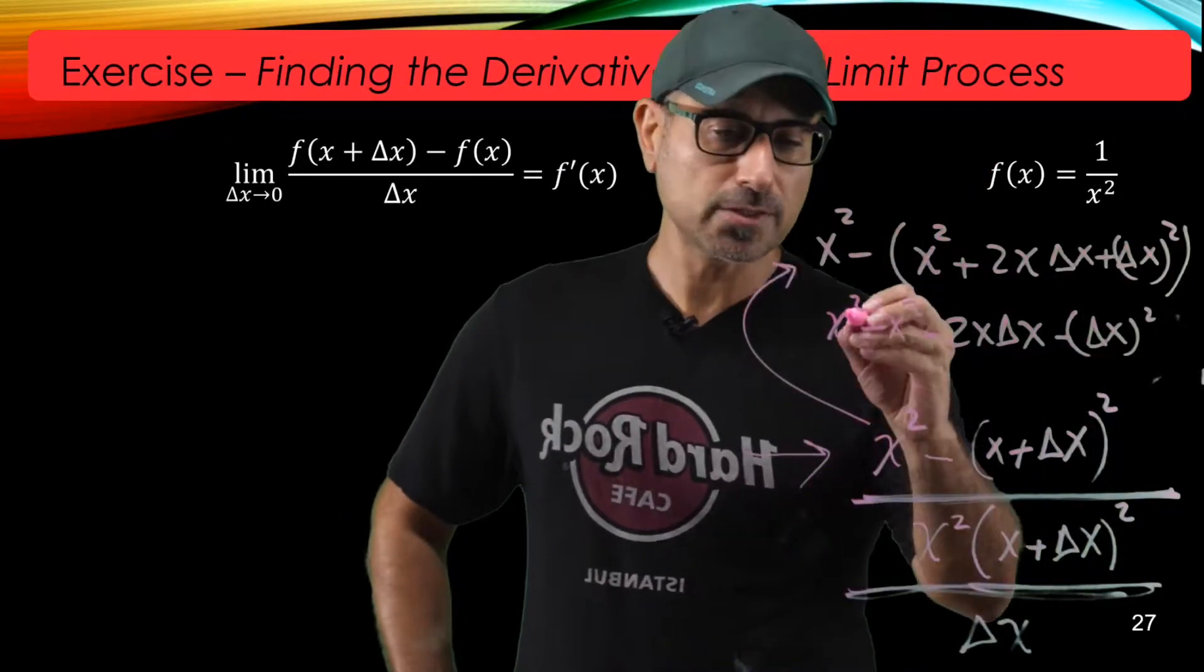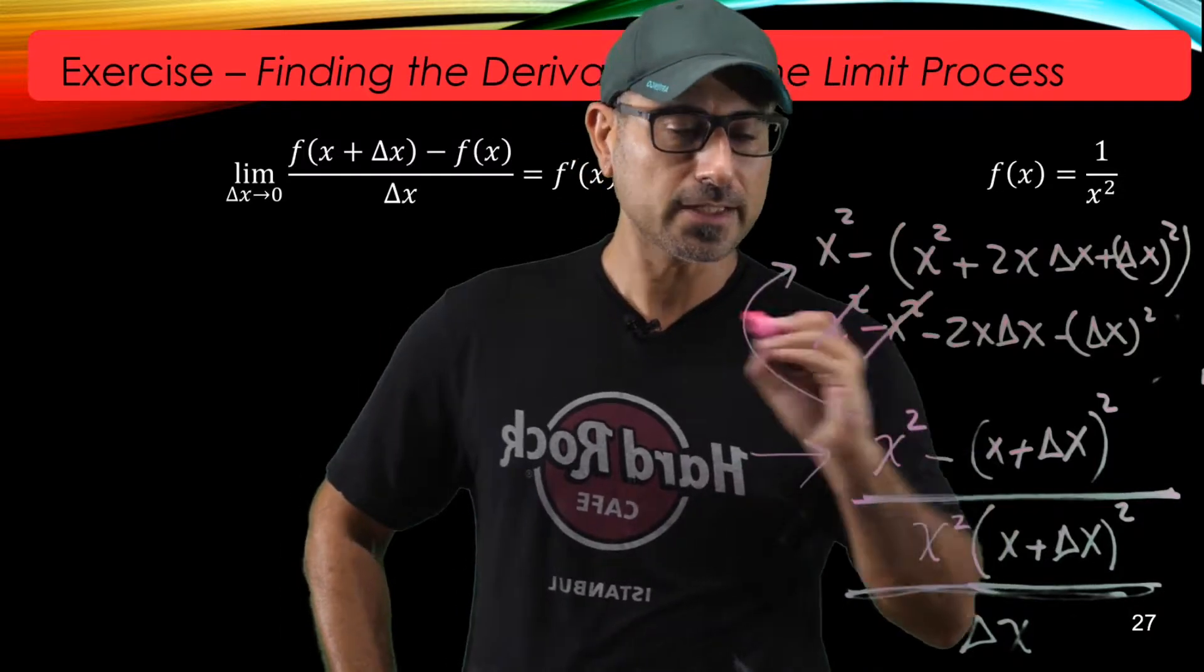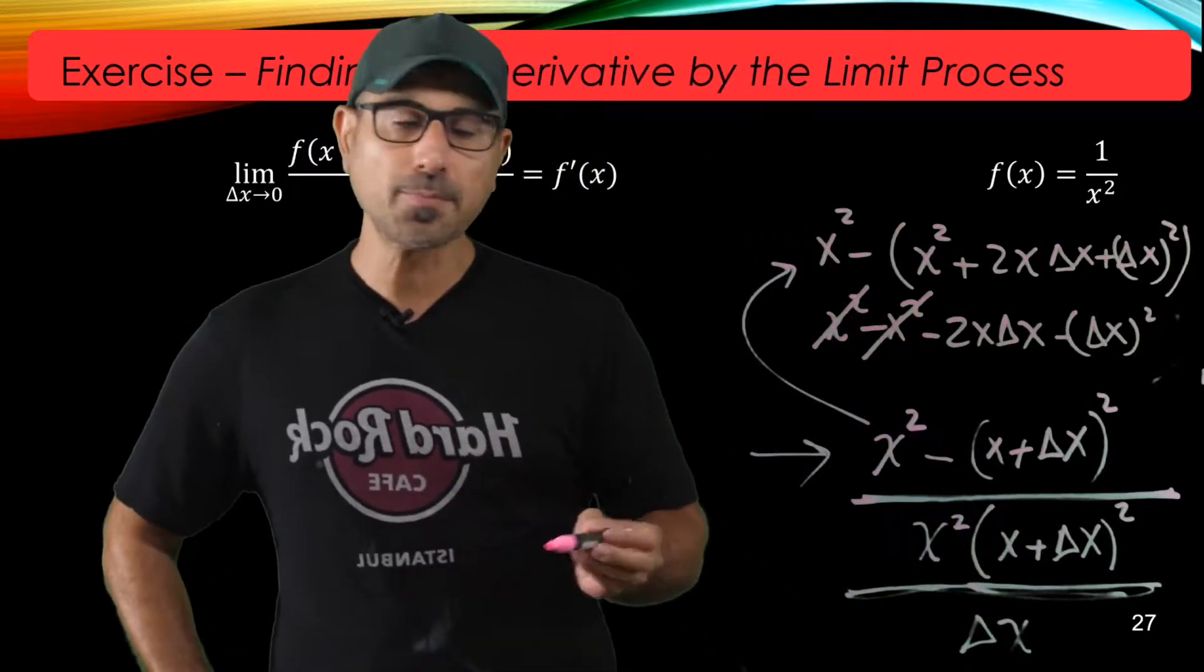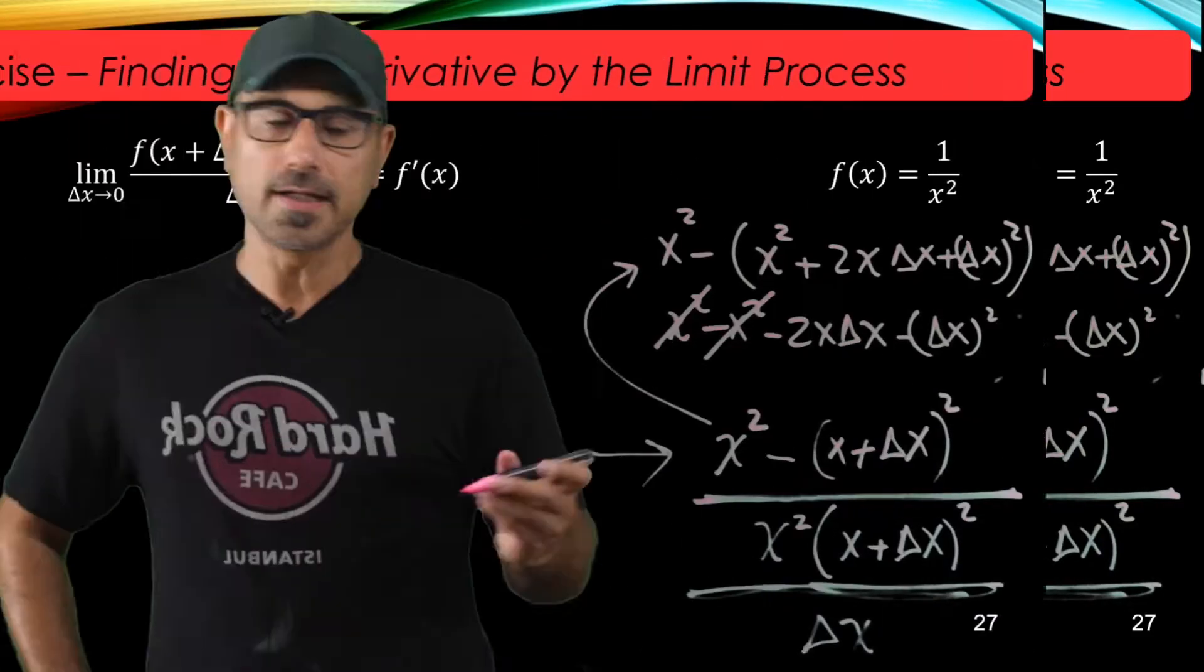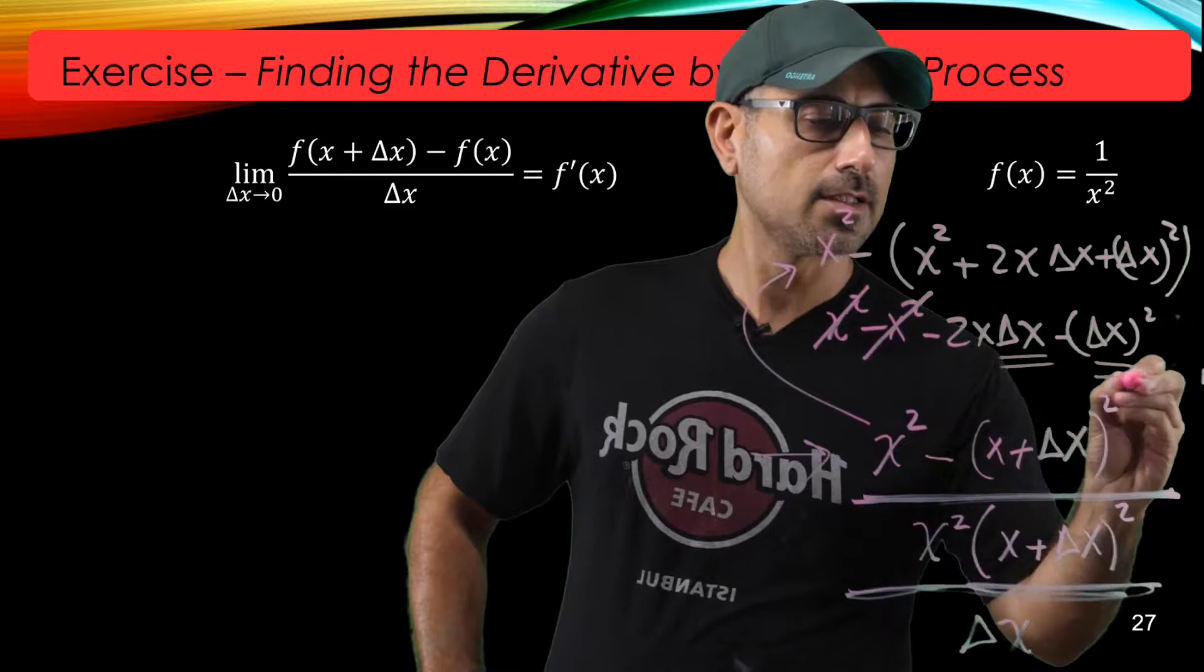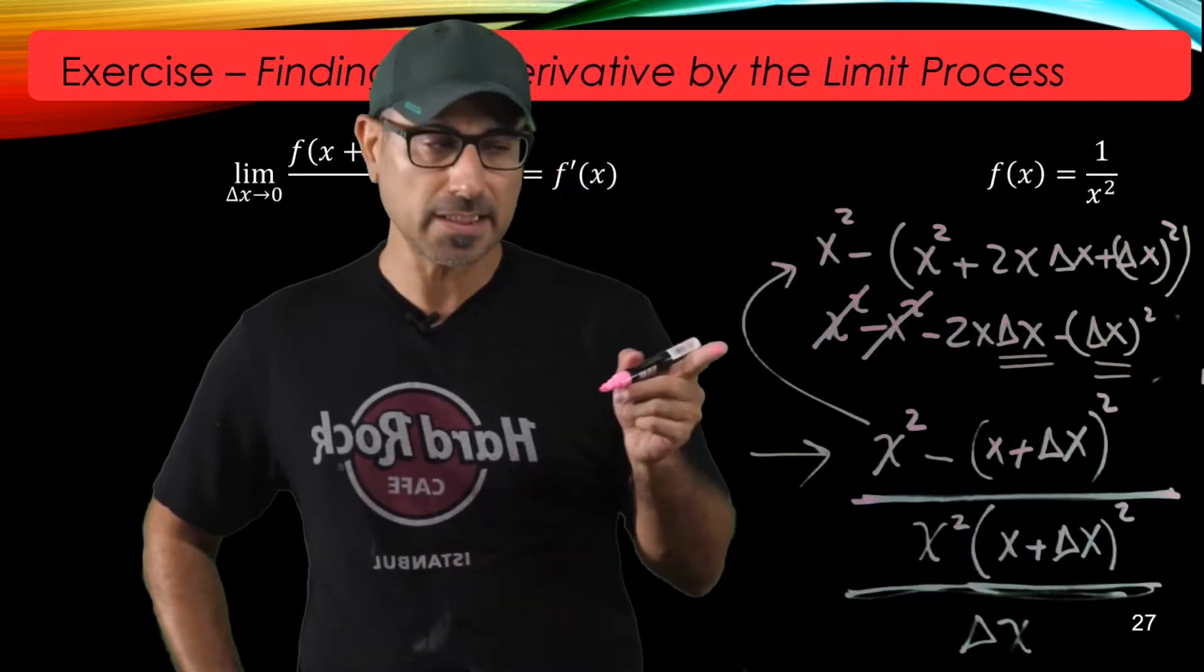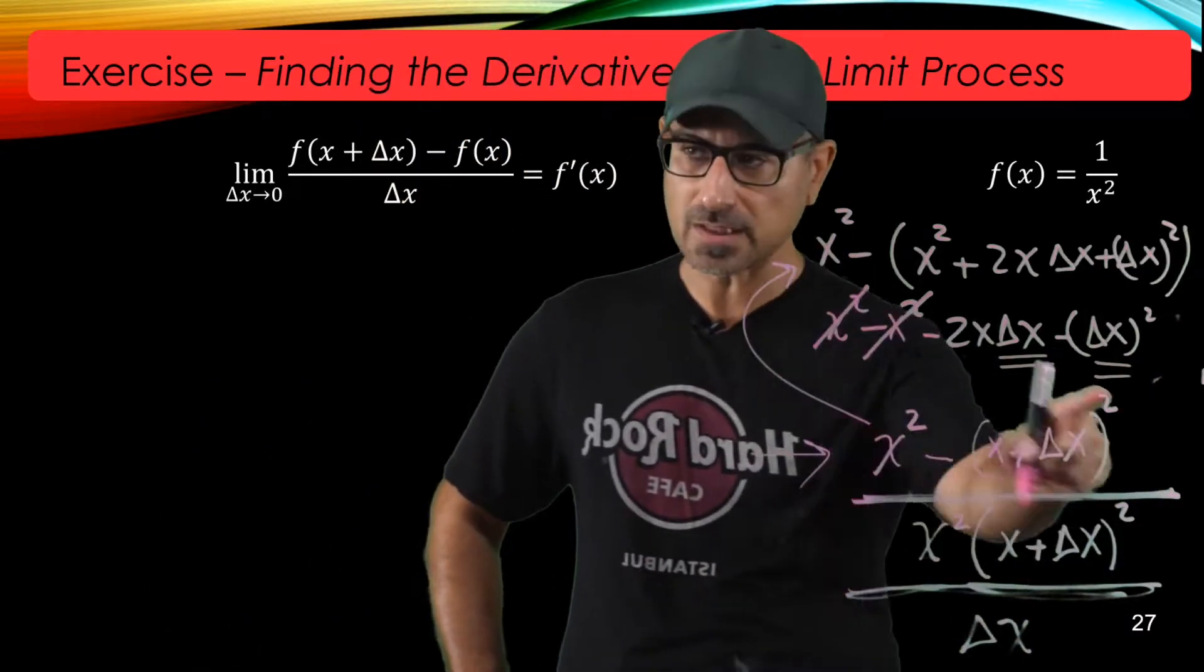All right, as you see the x squared term cancels this x squared term. So the top is simplified to minus 2x delta x minus delta x squared. And as you see, delta x is a common factor, so we may need that along the way to simplify this expression further.